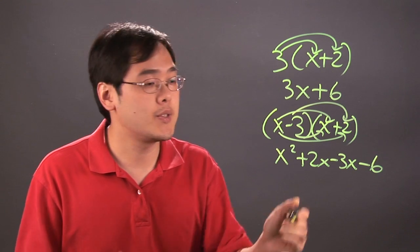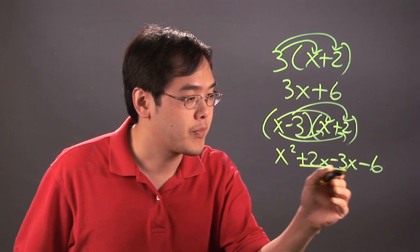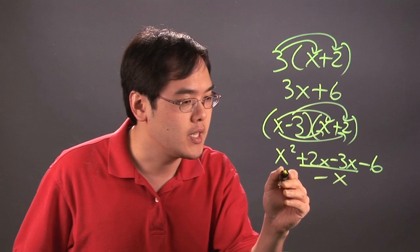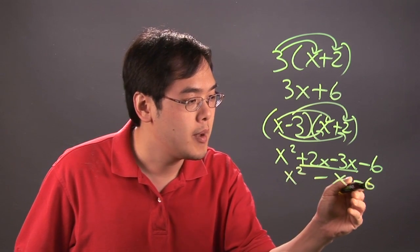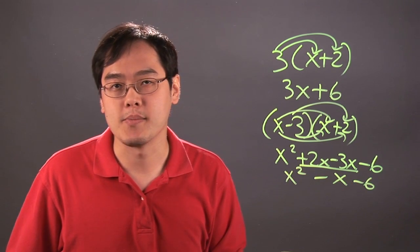Where you go from here is you combine your like terms. Positive 2x minus 3x is negative x. You leave the other terms as they are, so you have x squared minus x minus 6.